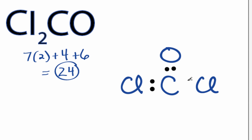We'll put 2 electrons between each of the atoms to form a chemical bond. We've used 6. Then we'll go around the outside, 8, 10, and 24.